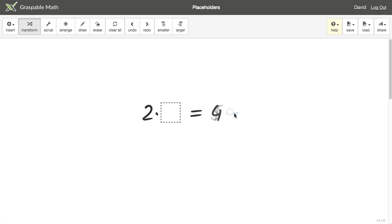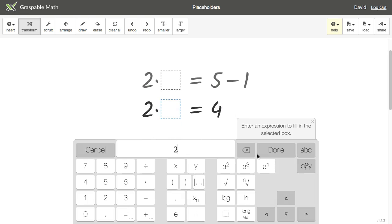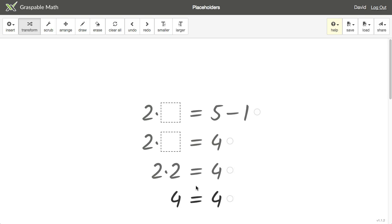I'll simplify the right side and see that it equals 4, so I need a number that equals 4 when multiplied by 2. And that number would be 2. I'll enter that into the placeholder and simplify, verifying my answer.